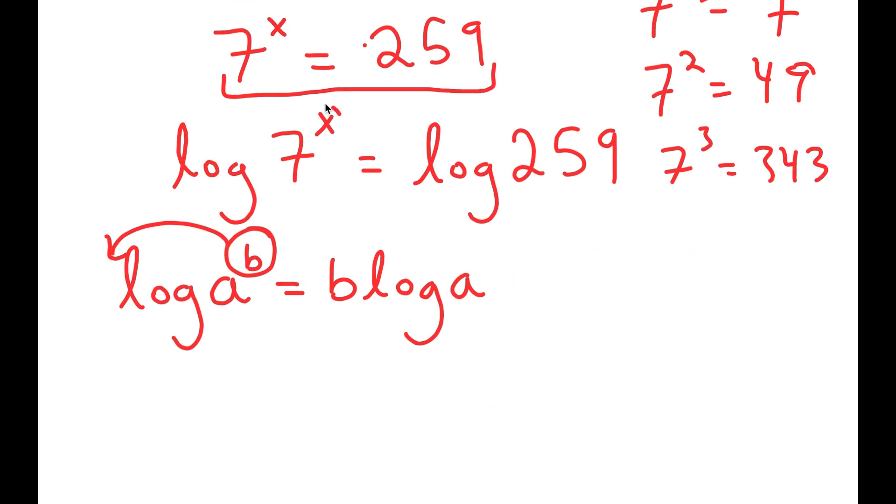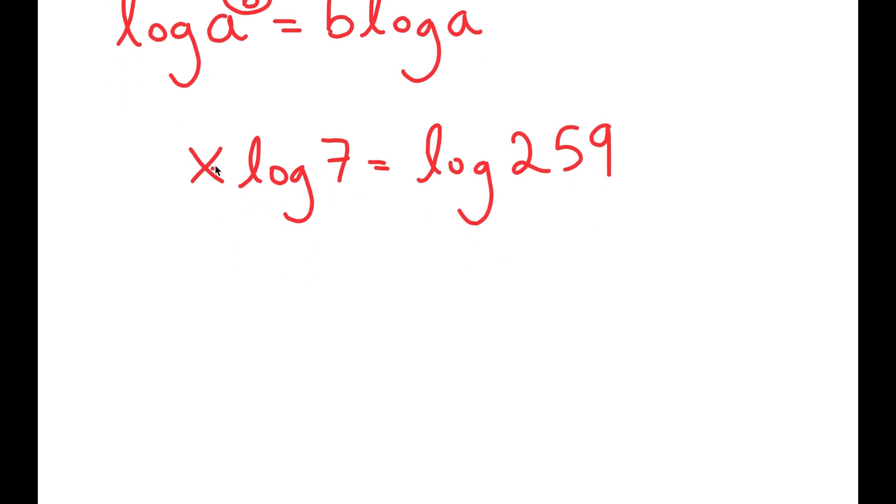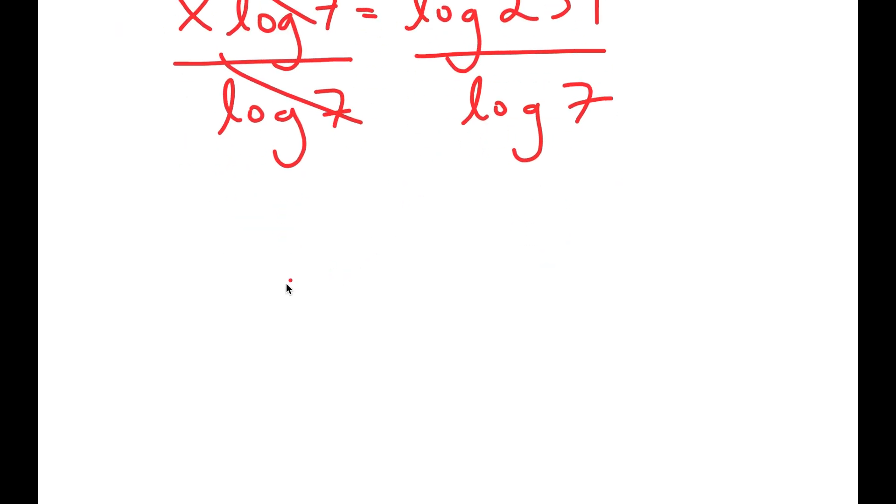So now, when we drop it down and make it a real term, it's much easier to solve for x. So now, what I'm going to do is divide both sides by log 7. So then these two cancel out, and I get x is equal to log of 259 over log 7.